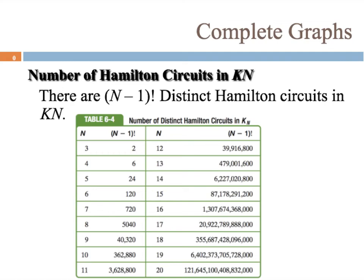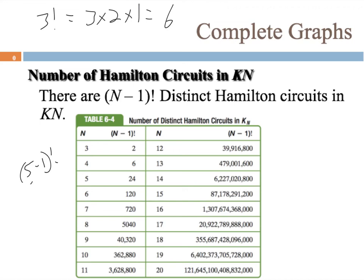There are (n minus 1) factorial distinct Hamilton circuits in k sub n. Factorial — that little exclamation mark — means you multiply all the integers down to 1 from that number. So three factorial is 3 times 2 times 1, which equals 6. For example, if n equals 5, we would have (5 minus 1) factorial, which is 4 factorial: 4 times 3 times 2 times 1, and that makes 24. That's how many distinct Hamilton circuits there are in a graph with 5 vertices.